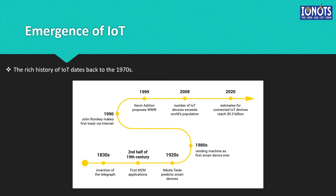In 1999, the term Internet of Things was used by Kevin Ashton during his work at P&G, which was widely accepted all over the world. In 2004, the term was mentioned in famous publications like The Guardian, Boston Globe, and The Scientific American.